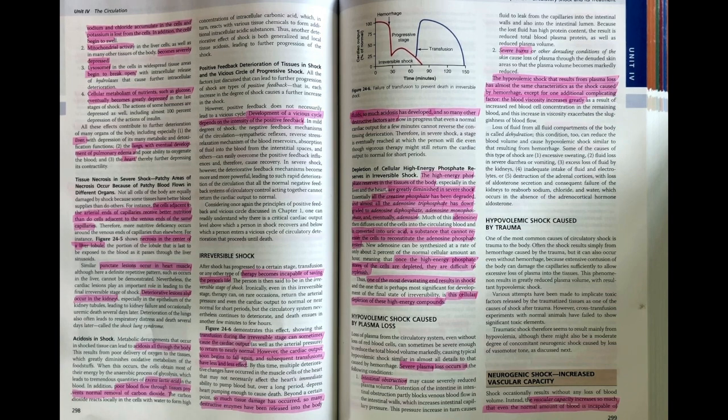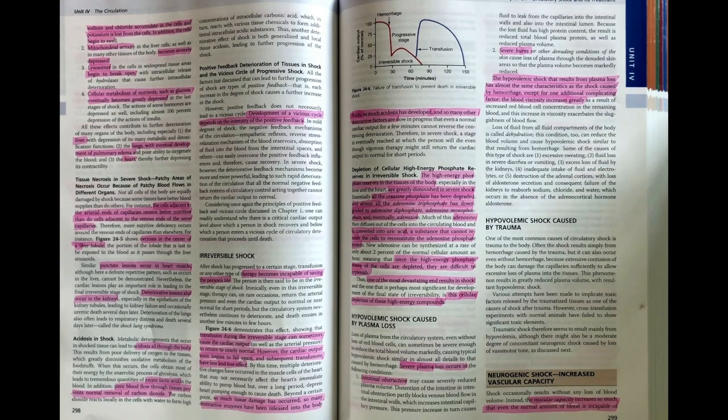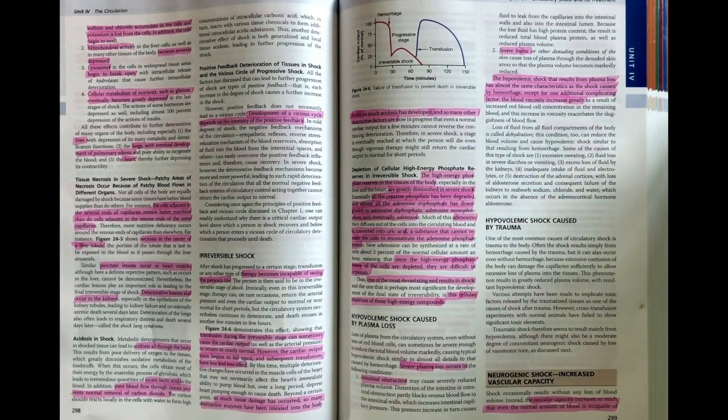Hypovolemic shock can also occur due to purely plasma loss. That can occur with intestinal obstruction that blocks all of the venous return to the intestines. We get leaky capillaries and loss of plasma within the abdomen. Severe burns can really just cause loss of plasma through the skin, and that can result in hypovolemic shock.